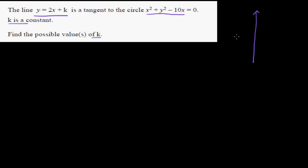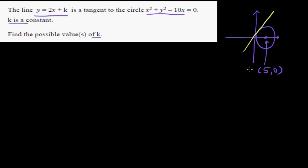So this is a circle. Let me give you an understanding. This is going to be a circle with center 5, 0 — the center is going to be 5, 0. The line y equals 2x plus k can have a tangent going like this, or you can also have a tangent going like this. So there are two lines which are possible which can be tangent to this circle.